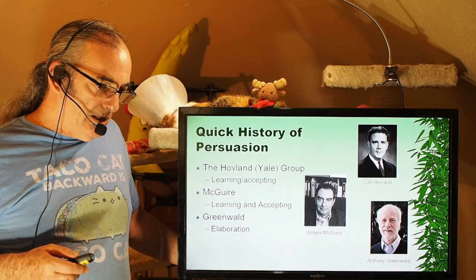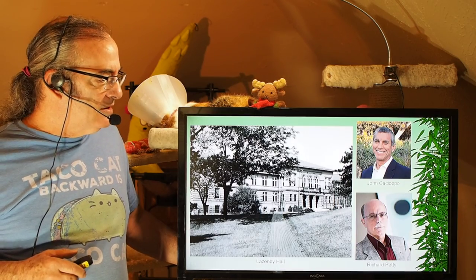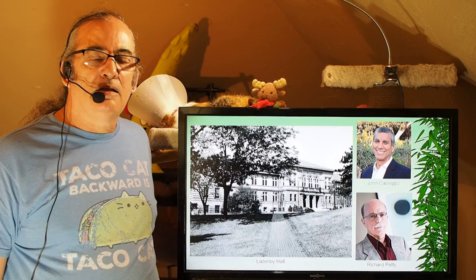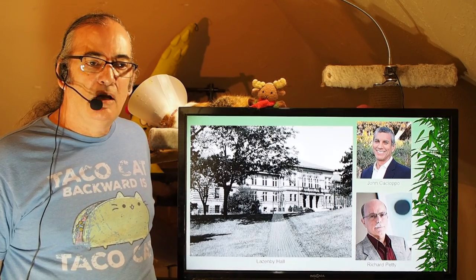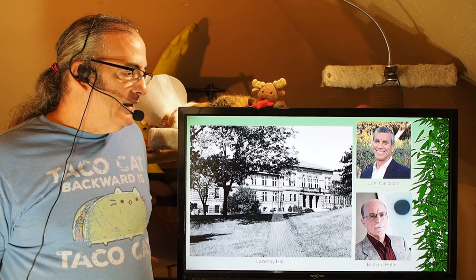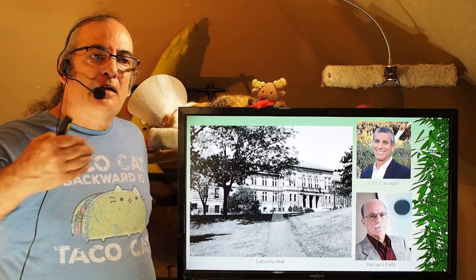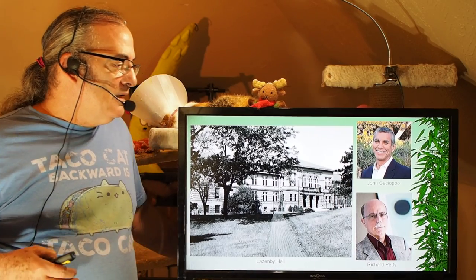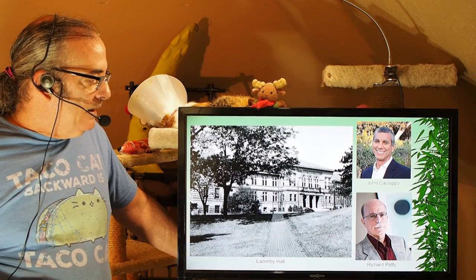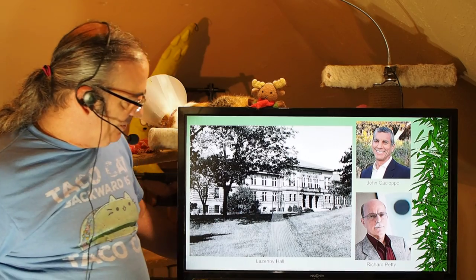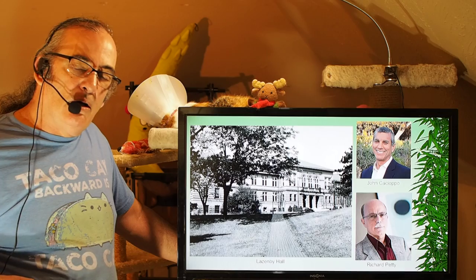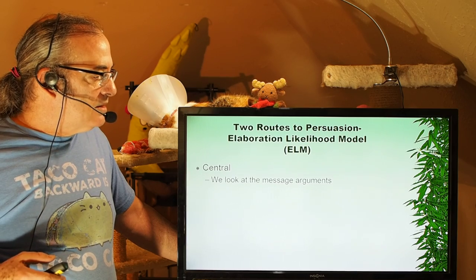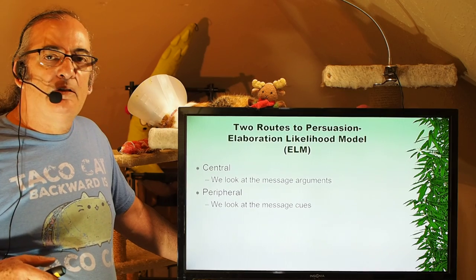At the Ohio State Social Psychology Program, Anthony Greenwald had a student named Rich Petty. Petty graduated, got his Ph.D. in Social Psychology, moved on to another research university in the Midwest, and continued to formulate his ideas. He came back to Ohio State as a professor and teamed up with John Cacioppo. Petty and Cacioppo, in Lazenby Hall, developed what they called the Elaboration Likelihood Model. The beauty of this model is that it says there are actually two routes to persuasion, and it really depends on your audience.